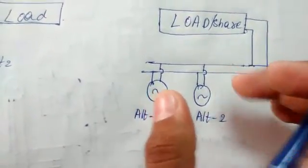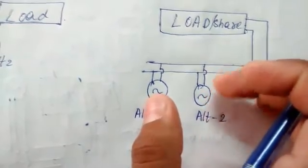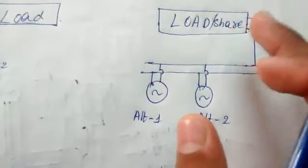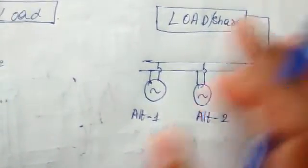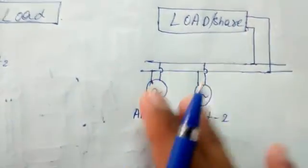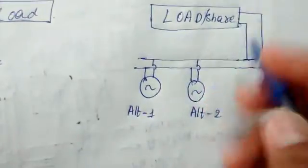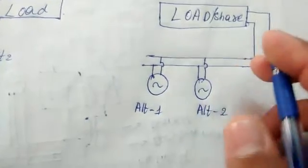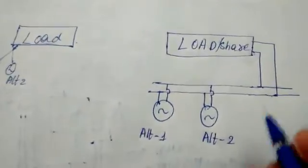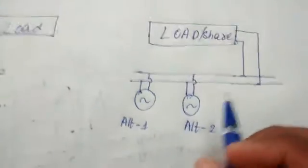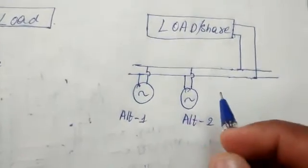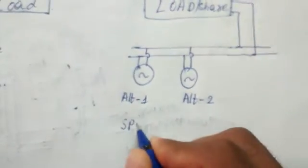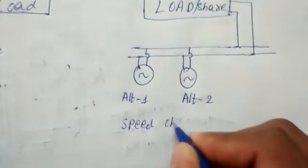We made each alternator produce voltage on the same number. In this case, the voltage of each is equal, so they share the load equally. To share the load, both alternators must be set to the same values. If there are some voltage differences, then there will be load sharing differences.